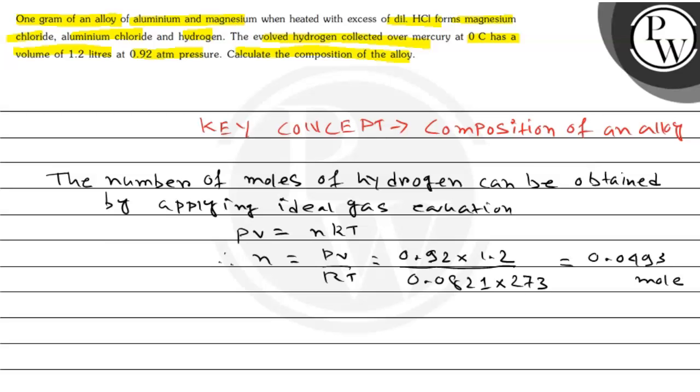Now let's look at the reactions. Mg plus 2HCl reacts to produce MgCl2 plus H2. And 2Al plus 6HCl reacts to produce 2AlCl3 plus 3H2.